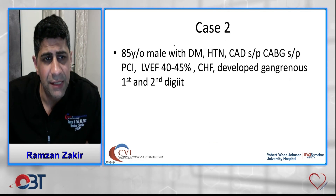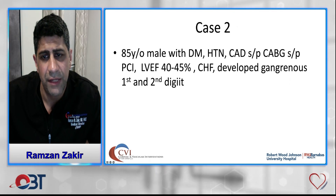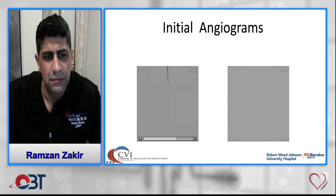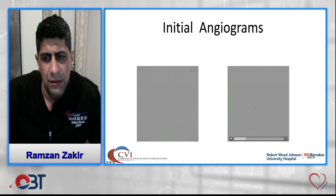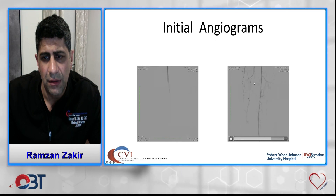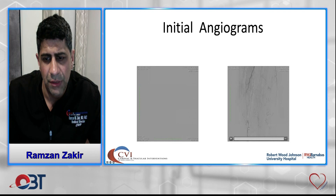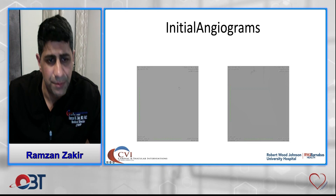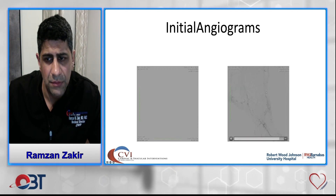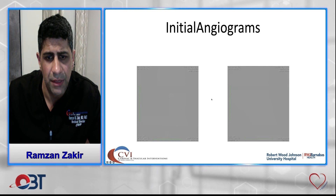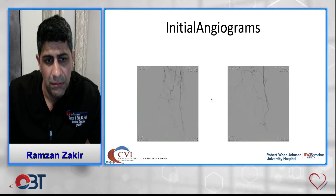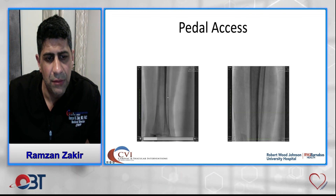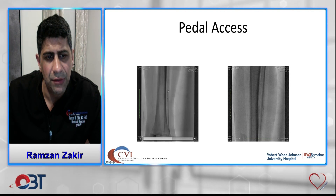Second case: a more complex 85-year-old male with multiple risk factors presenting with gangrenous first and second digits. Angiogram again shows a long anterior tibial artery occlusion with the reconstitution point visible. Antegrade wiring was unsuccessful. On the initial angiogram you can see the dorsalis pedis reconstituting, and we were able to obtain access in the dorsalis pedis.